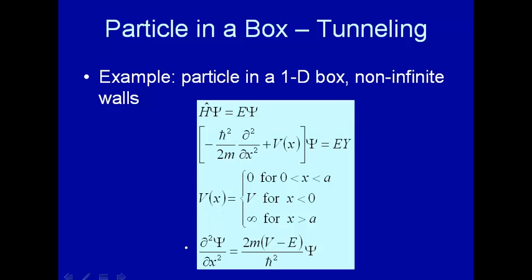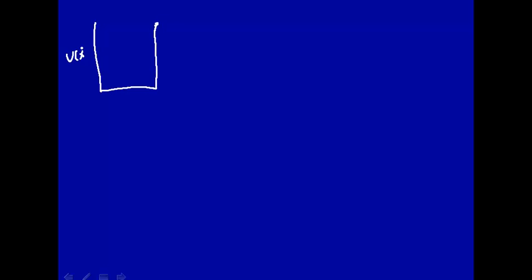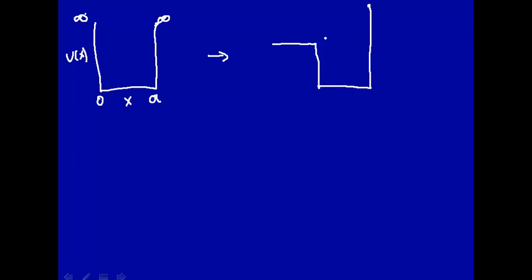Let's look at the implications of that new potential well and see what happens. Let's set up the system. Previously, for a particle in a box, if we plot the potential as a function of a one-dimensional box — a function of distance — this is where the box starts, this is where it ends, 0 to A. The values at the edges of the box go up to infinity. Now what we're going to do is make the left edge go to some value, call it V0. We'll reference the potential inside the box to 0, and the right side still goes up to infinity.